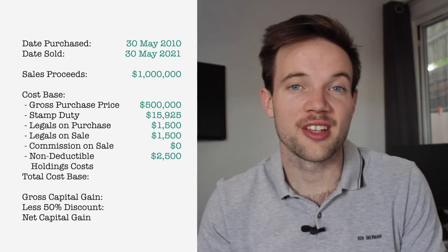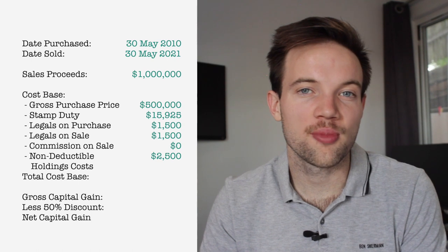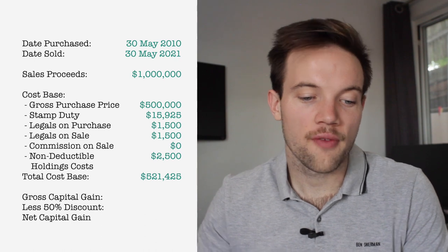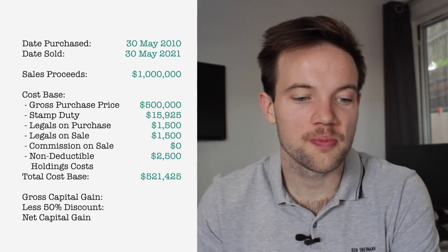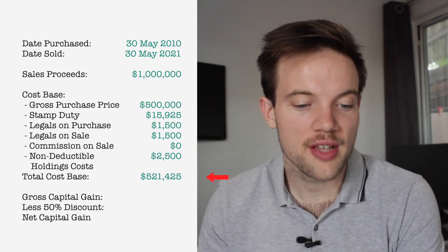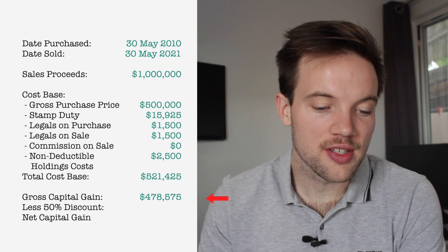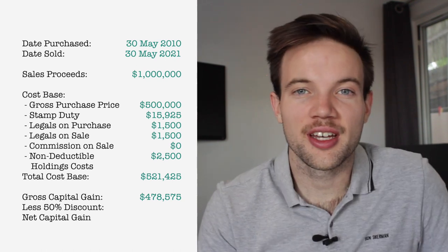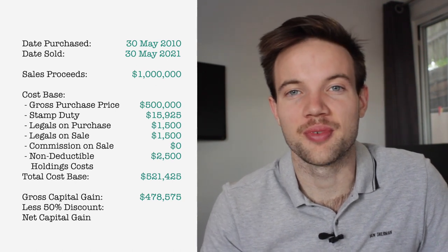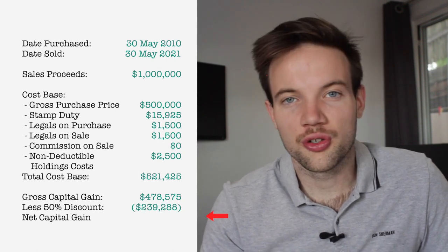That's all the information from our settlement statements. Now we calculate the capital gains liability. First, add up all cost base items — in our example the cost base totals $521,425. Then subtract that from the sales proceeds: $1,000,000 minus $521,425 equals a gross capital gain of $478,575. In Australia, if you hold a capital item for longer than 12 months you're eligible to discount your gross capital gain by 50%, so multiply by 50% or divide by two to get your net capital gain.